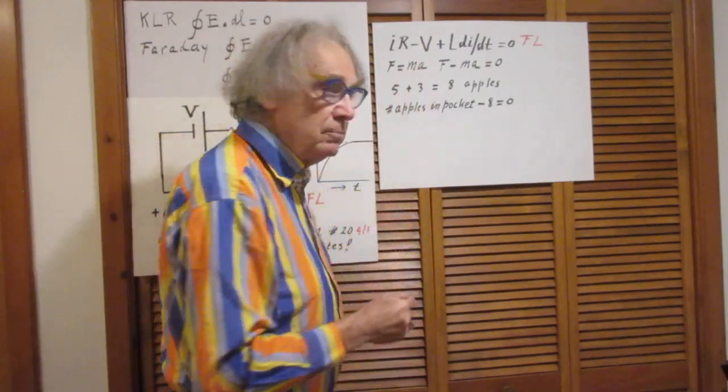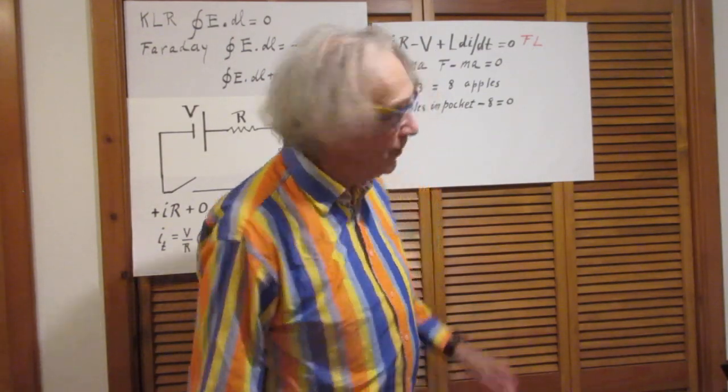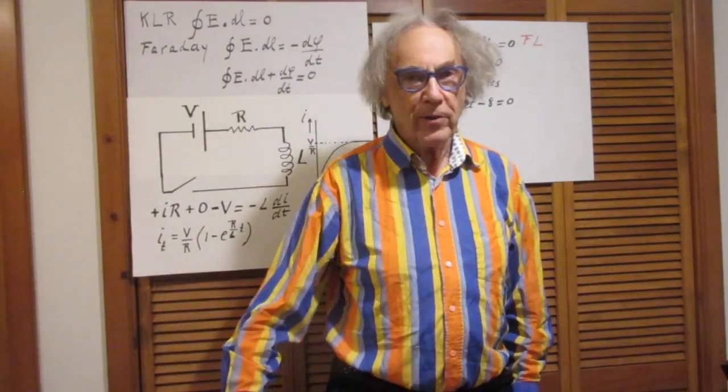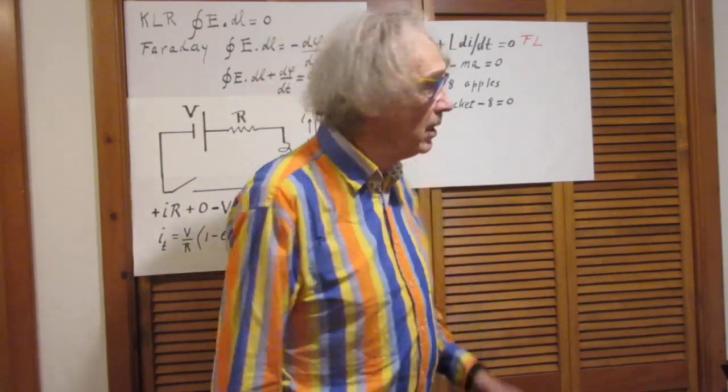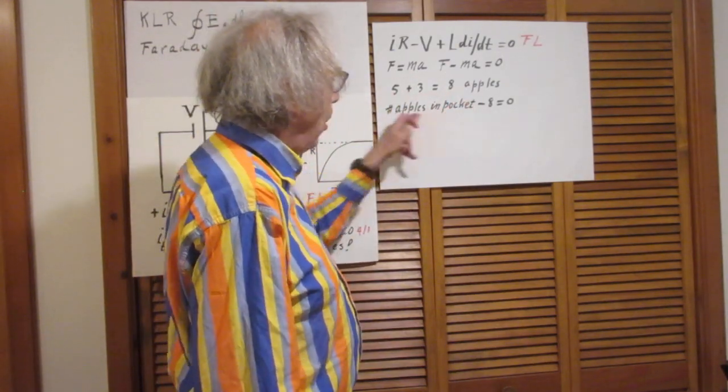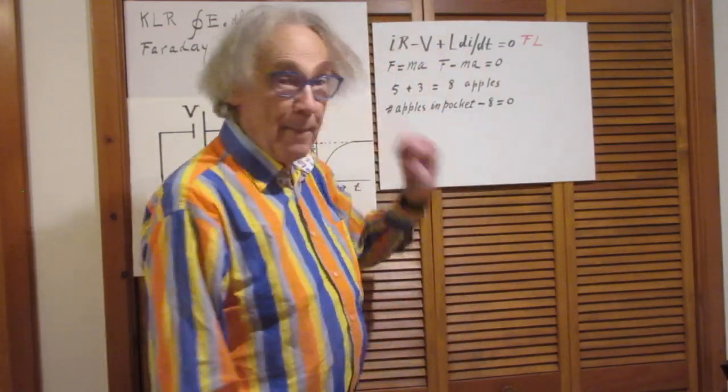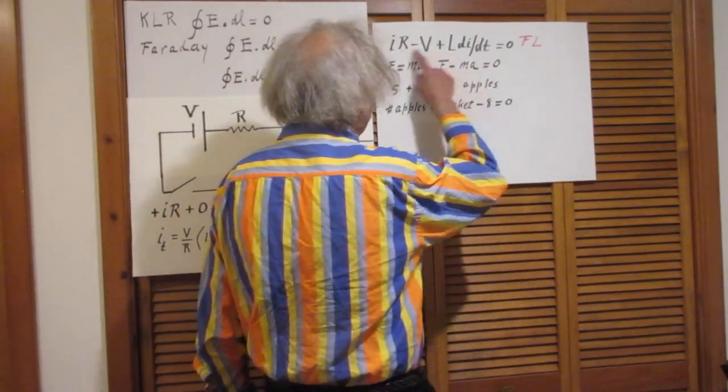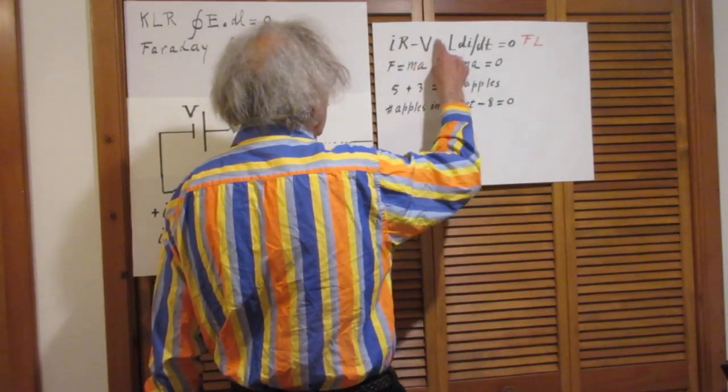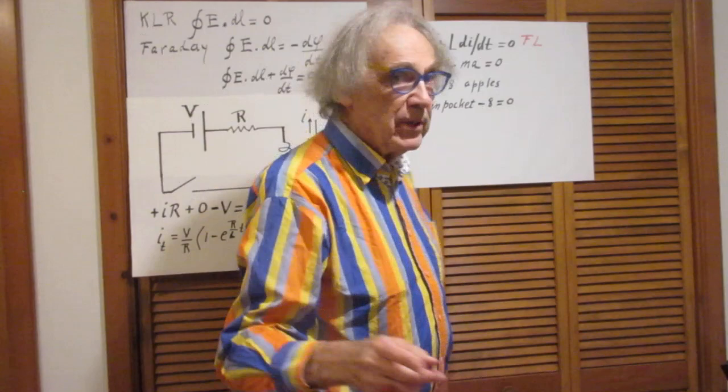Newton's second law, F equals ma. Do we agree that it is correct? Well, F minus ma is zero. That's the same law. It doesn't mean that F is zero. If I have five apples in my left pocket and three in my other pocket, I have eight apples in my pocket. Five plus three is eight apples. So the total number of apples in my pocket minus eight is zero. That doesn't mean that I have zero apples in my pocket. It means that I have eight apples in my pocket. Right here, this is not the closed-loop integral of E dot DL. This is the closed-loop integral of E dot DL. So this is Faraday's law and it is not Kirchhoff's loop rule.